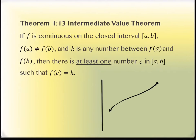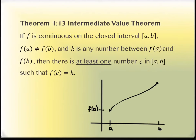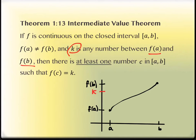Just for the sake of having some reference points, we'll put them on an axis. We'll call this one A and this one B. So here is F of A, and up here is F of B. K is a number between F of A and F of B — it doesn't say where it is; in fact, it doesn't matter. Any number that's between them will have this property. This theorem is saying that there is some X value that corresponds to that Y value of K.